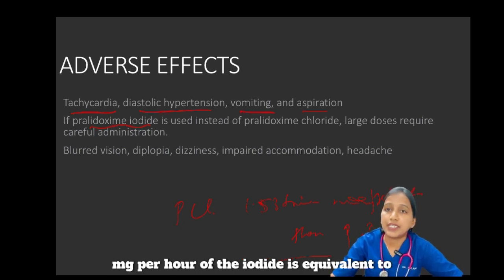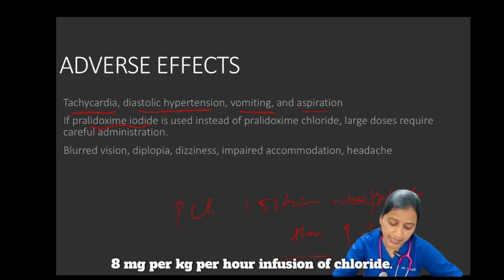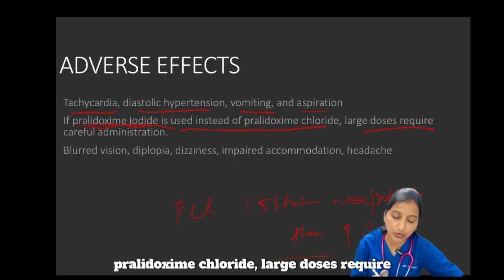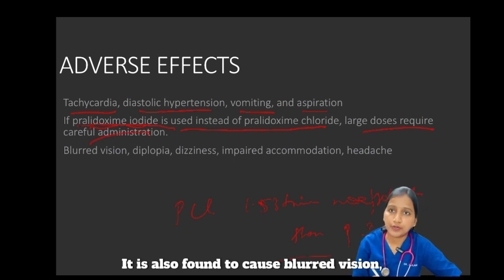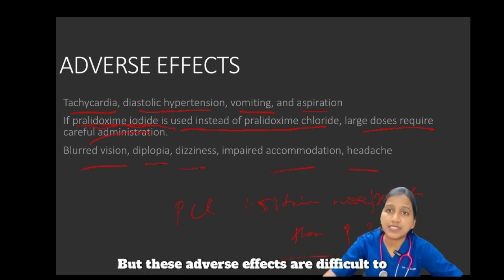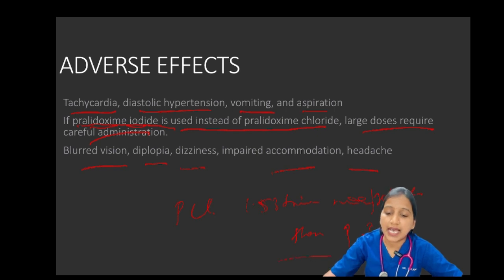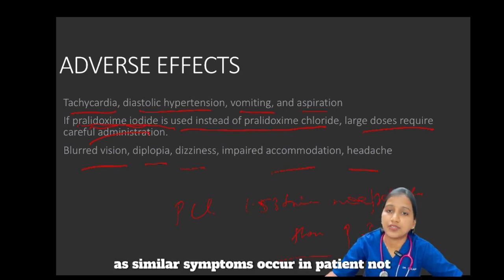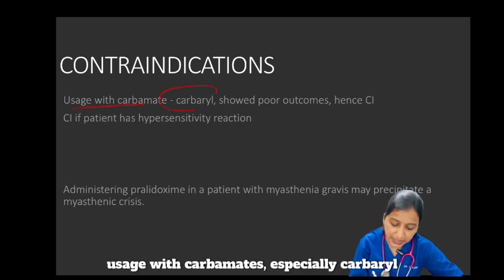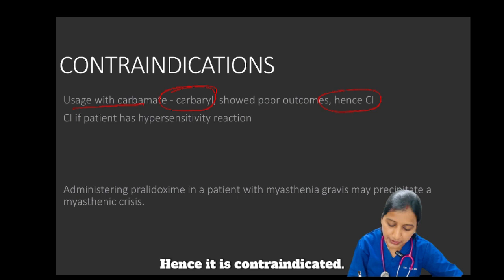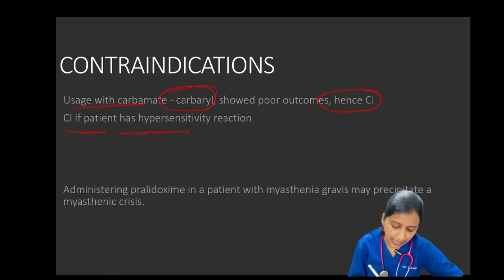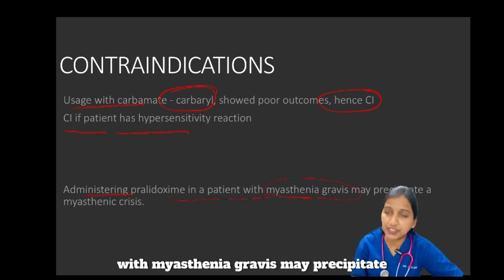In high-dose regimens, 650 mg/hour of the iodide is equivalent to 8 mg/kg/hour infusion of the chloride. If pralidoxime iodide is used instead of pralidoxime chloride, the larger doses required must be carefully monitored. Pralidoxime is also found to cause blurred vision, diplopia, dizziness, impaired accommodation, and headache, but these adverse effects are difficult to discern in patients with OP poisoning as similar symptoms occur in untreated patients. Contraindications: usage with carbamates, especially carbaryl, showed poor outcomes and is contraindicated. It is also contraindicated in patients with severe hypersensitivity reactions, and administering pralidoxime in patients with myasthenia gravis may precipitate a myasthenic crisis and hence must be used carefully.